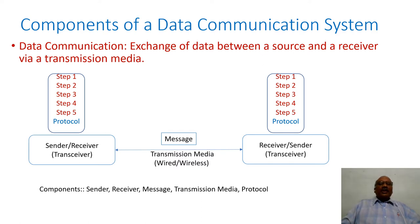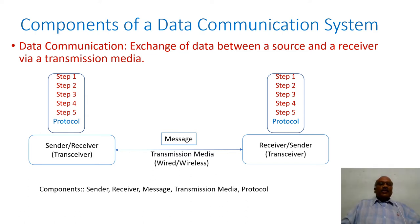The process of transforming the information or the message into an appropriate form is done with the help of certain rules, which we term as protocols. The basic components of a data communication system are: the sender, the receiver, the actual message being transmitted, the transmission media which provides a medium to communicate between the two entities, and the protocol governing the transformation of data into an appropriate form.